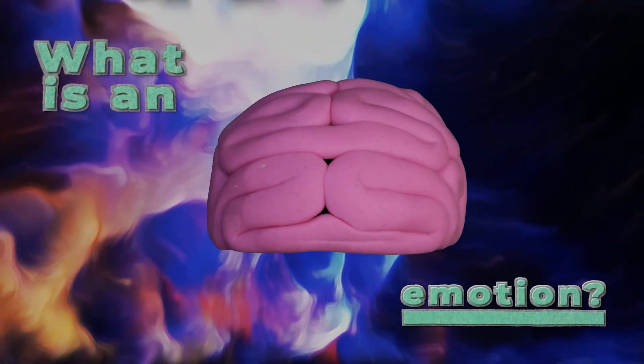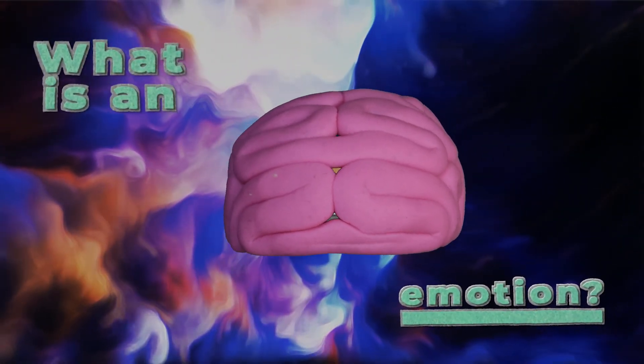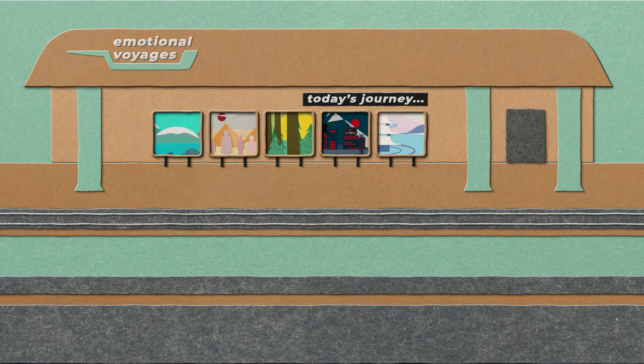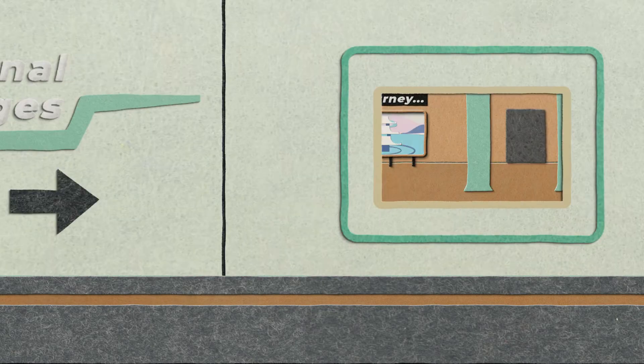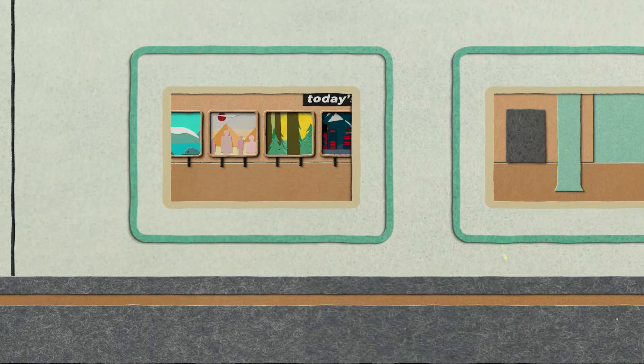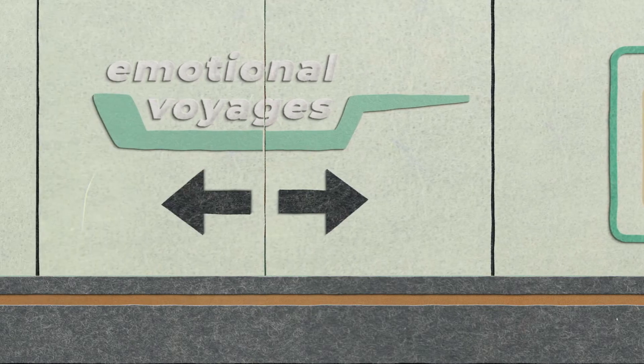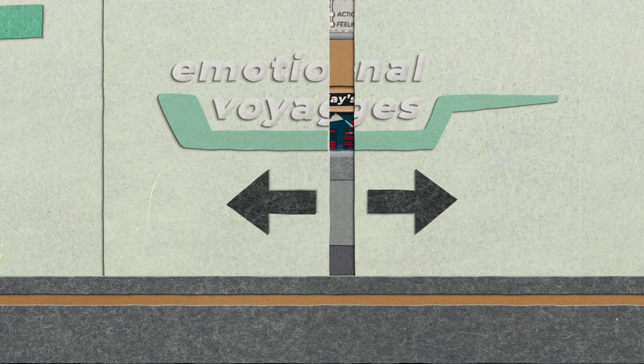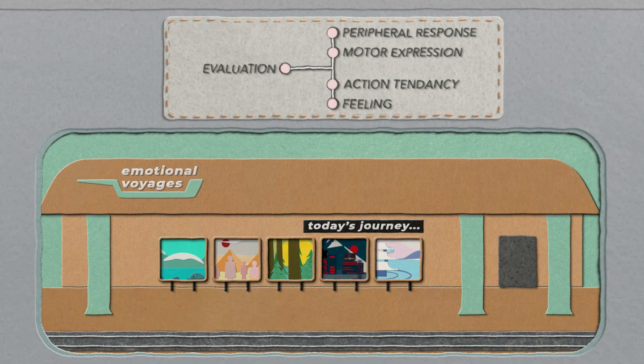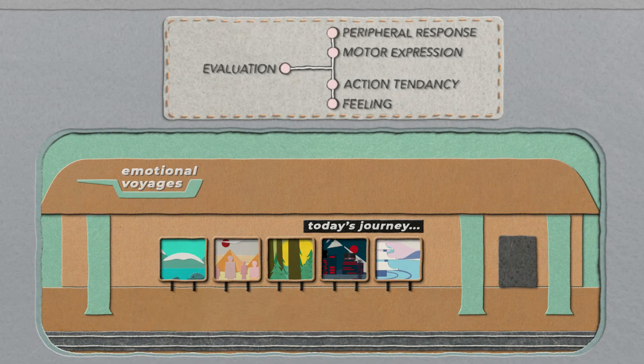Given the number of disciplines studying emotion and the diversity of the approaches to study emotions, it is not surprising that there are several theories that try to answer what is an emotion. For this introduction, we will use a definition that is commonly used in the affective sciences. It does not consider emotion to be one thing, rather made up of five components.